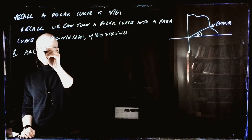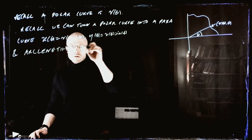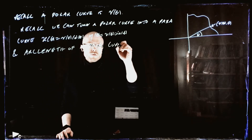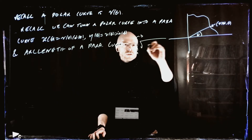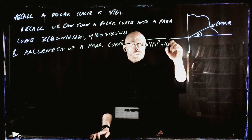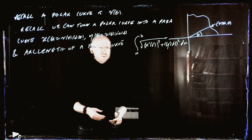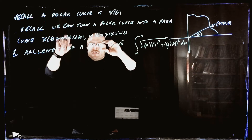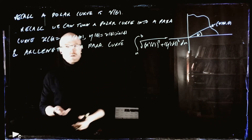The arc length of a parametric curve is just the integral from a to b of the square root of x'(t)² + y'(t)², which follows easily from the pictures — basically by Pythagoras. We can use this formula to get arc length for a polar curve just by differentiating these expressions and seeing what we get out.